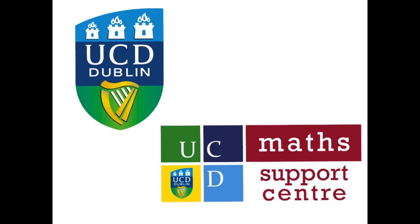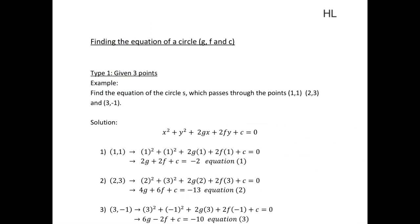This video was produced by the UCD Math Support Center in conjunction with the UCD Access Center. In this video we're going to be looking at various ways of finding the equation of a circle of the form that involves F, G, and C, given various bits of information about the circle.